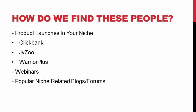So how do you find people that have a huge email list in your niche? There are multiple ways. Product launches — every niche has people launching information products. You can head over to ClickBank, JVZoo, Warrior Plus, or any affiliate network and search for products in your niche. You can also find people who are doing webinars, or find blogs and forums related to your niche and reach out to those people. Remember, we're only looking for people with thousands and thousands of subscribers.